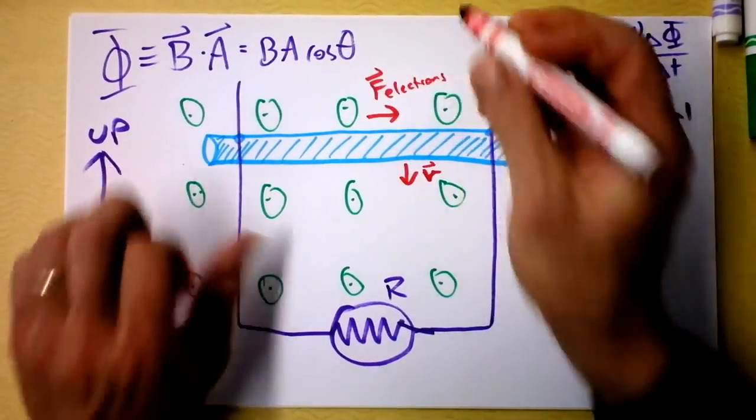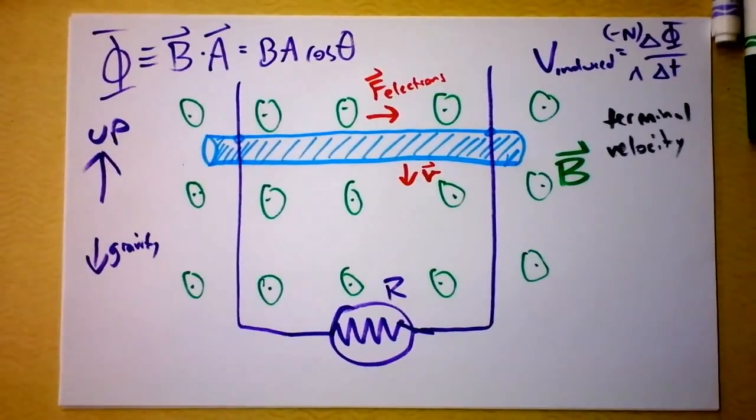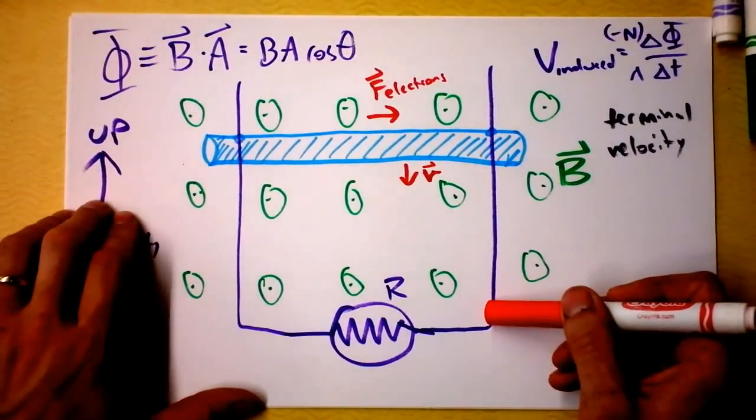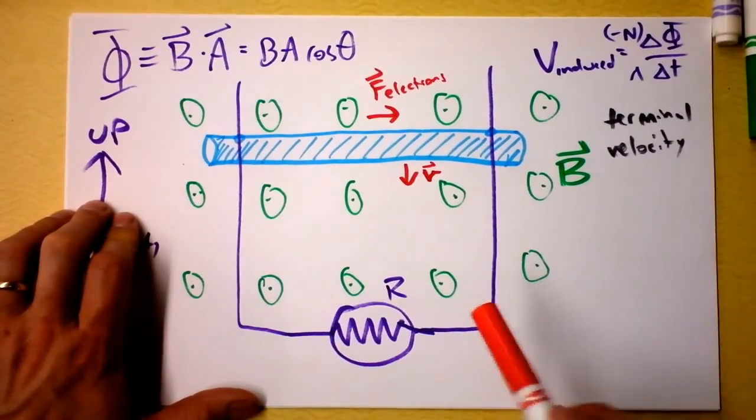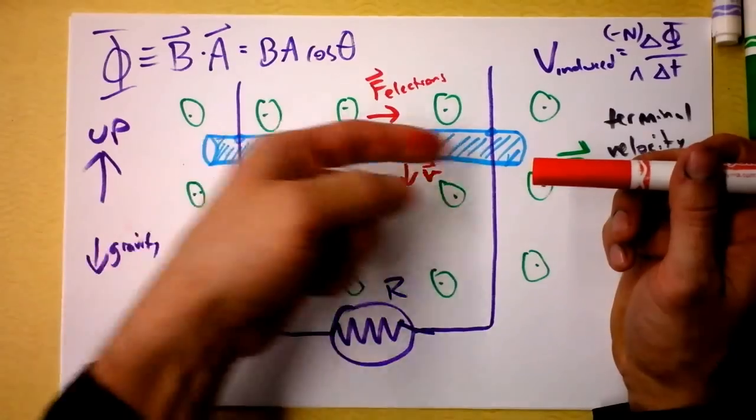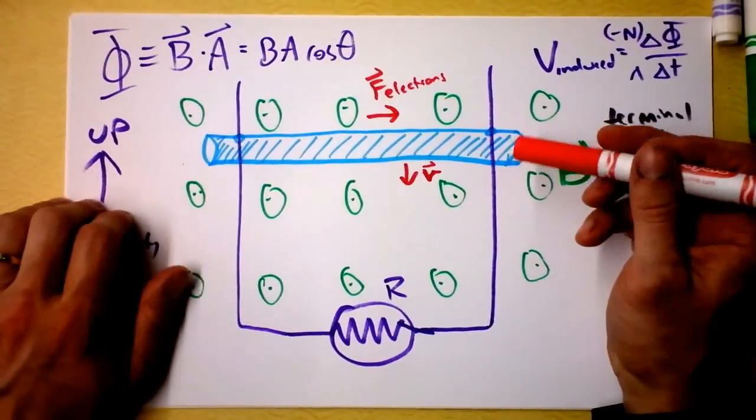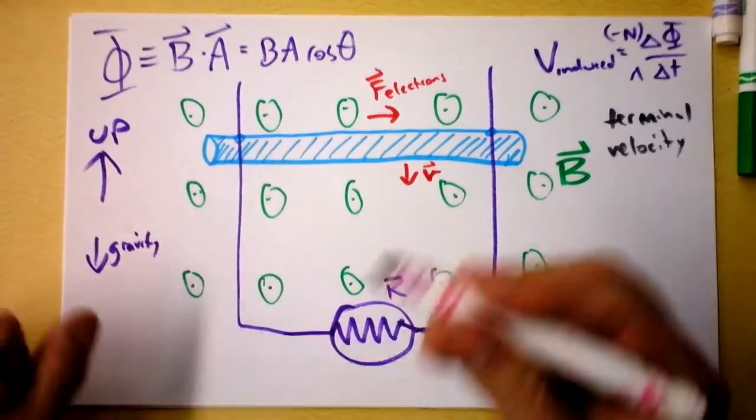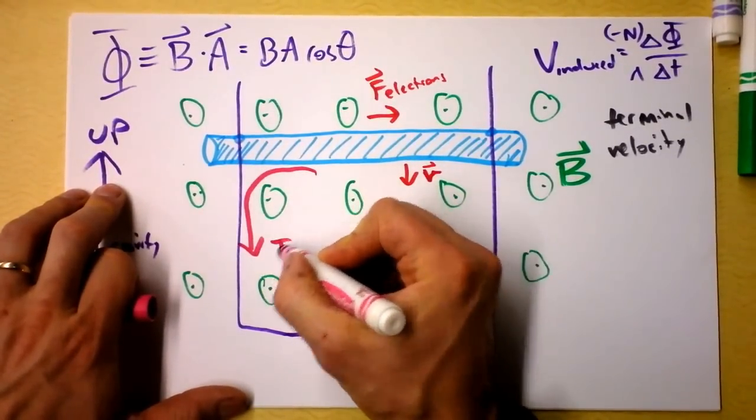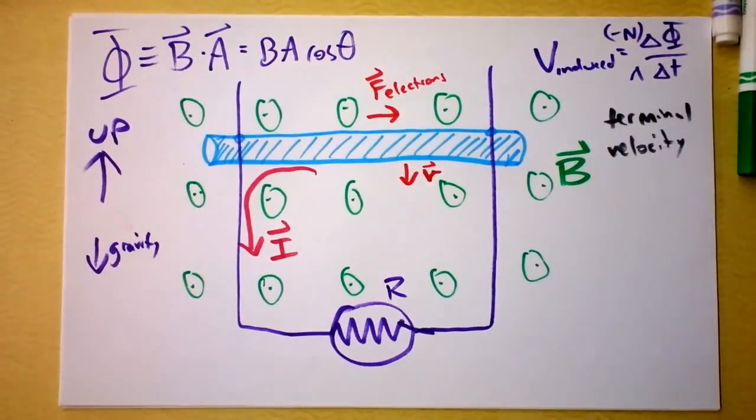So which direction will the current go? Well, the current wants to go... wait a second, is this wire moving in the magnetic field? No. Is this wire moving in the magnetic field? No. Is this wire moving in the magnetic field? No. But the force on the electrons is that direction. And so they want a current to be going the opposite direction. So I'll say that a current will go this direction through the circuit.